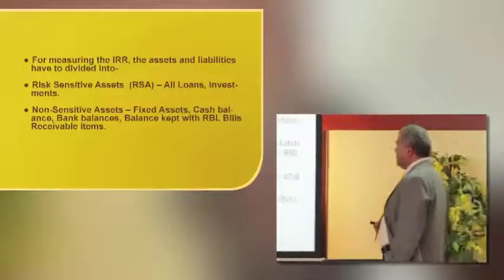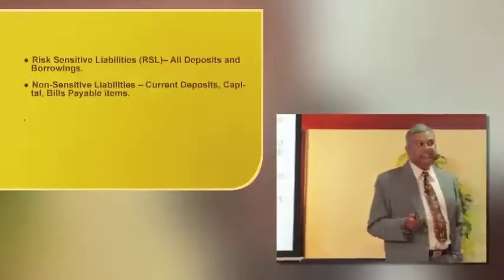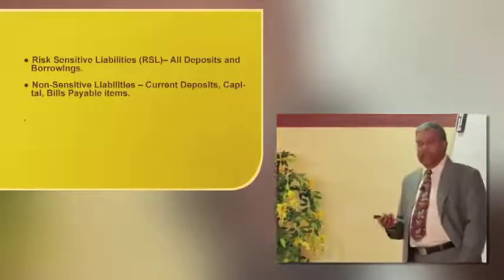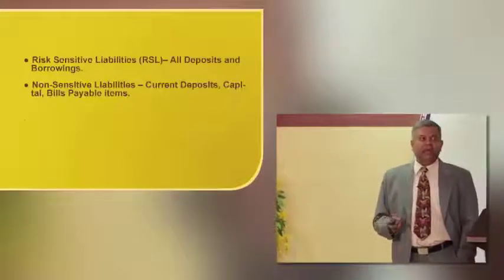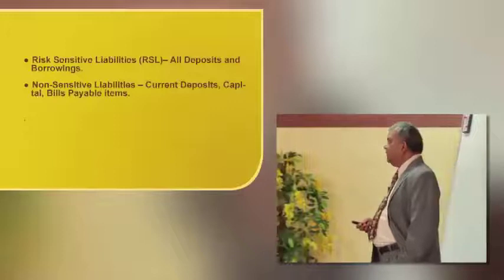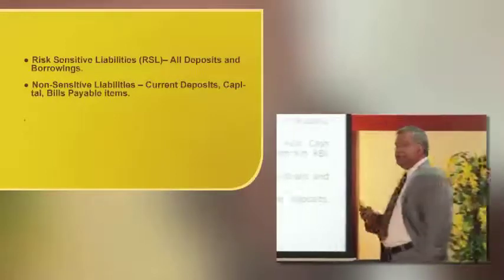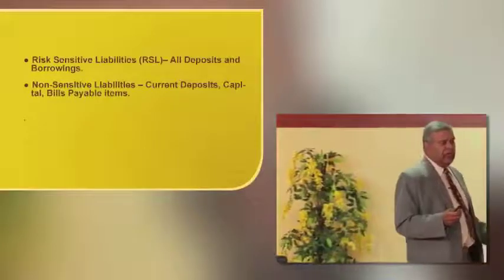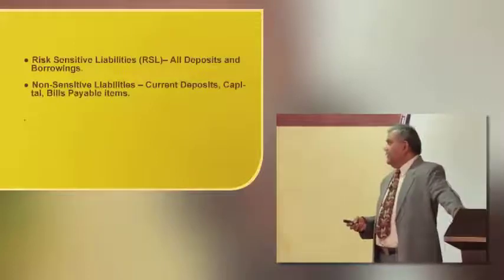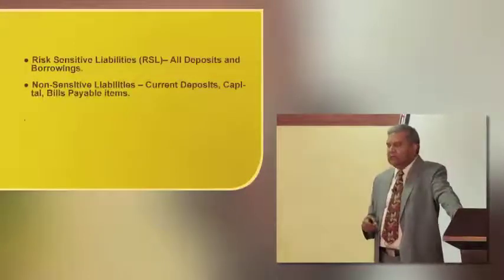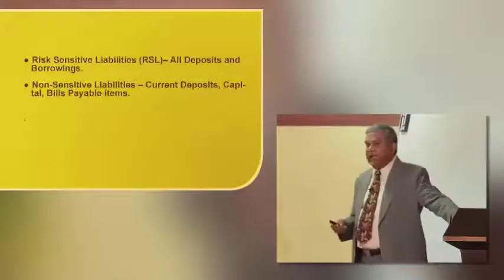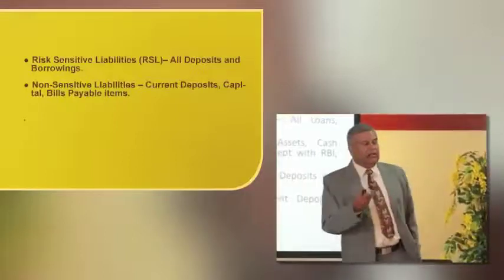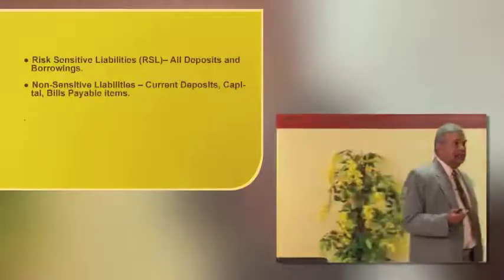Risk-sensitive liabilities include all deposits, term deposits, and borrowings such as call money and REPO — all linked to a particular rate of interest — including savings bank deposits which, though deregulated, almost all banks pay 4% on. Non-sensitive liabilities include capital, on which no interest is linked, and current deposits on which banks pay absolutely no interest, as well as bills payable and intra-bank adjustment items.